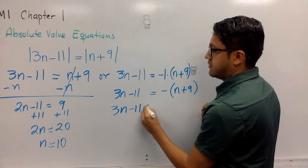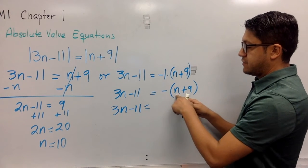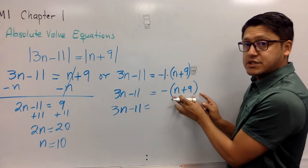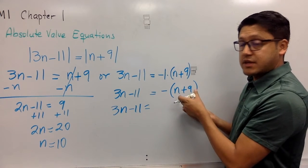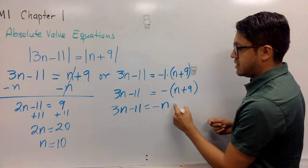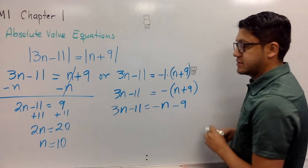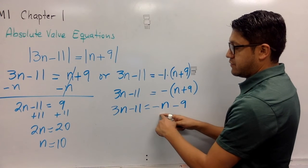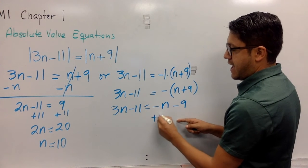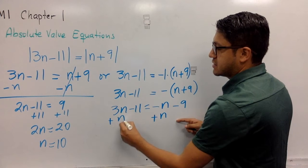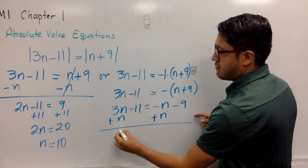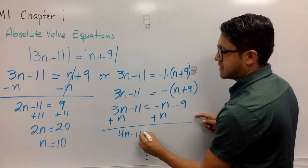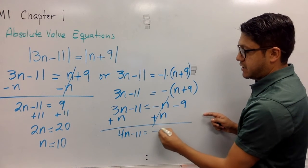3n minus 11 equals negative outside the parenthesis, which just changes the signs of everything inside. So it's negative n and negative 9. Now you can move on. We're going to get rid of this minus n by adding n on both sides. So you get 4n minus 11 equals minus 9.